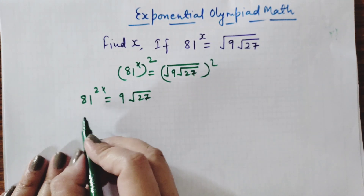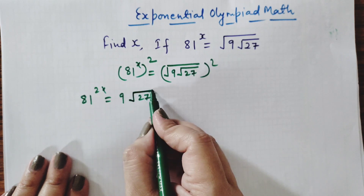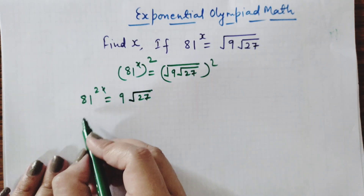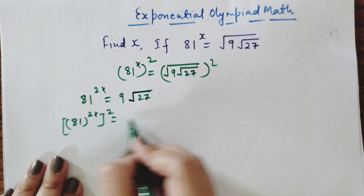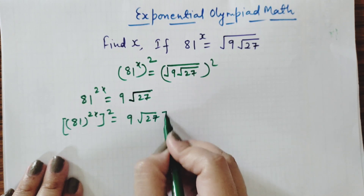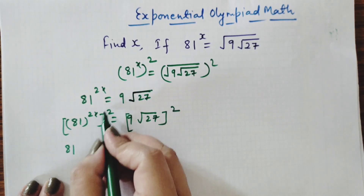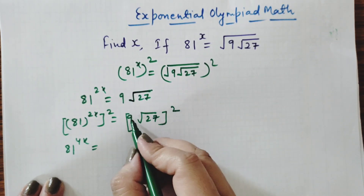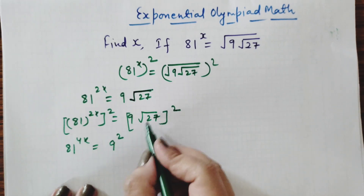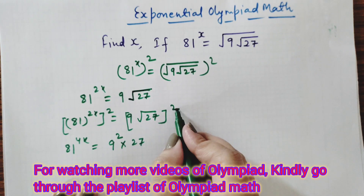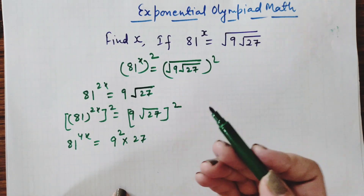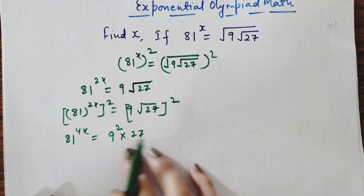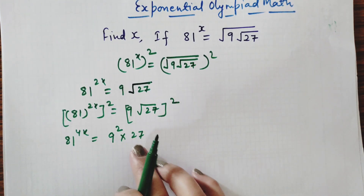After that we will remove this inner root also. So we will apply squaring both sides again. So now 81 power 2x whole squared gives us 81 power 4x, and this square comes inside. 9 is also squared and the root is removed by the square. So our first aim is to remove these two roots by squaring both sides twice. Finally we get 81 power 4x equals 9 squared times 27.